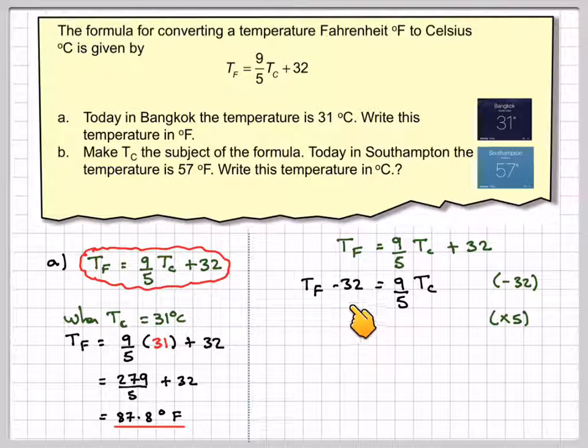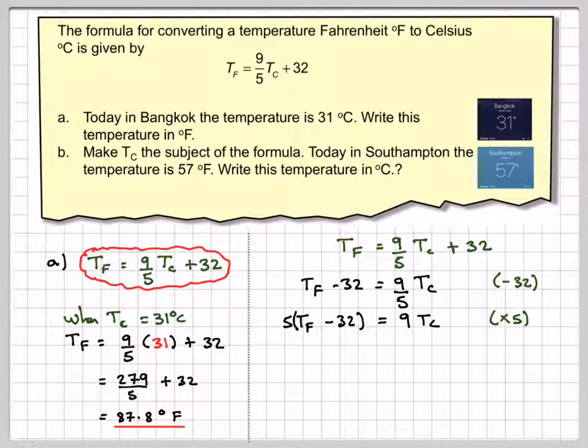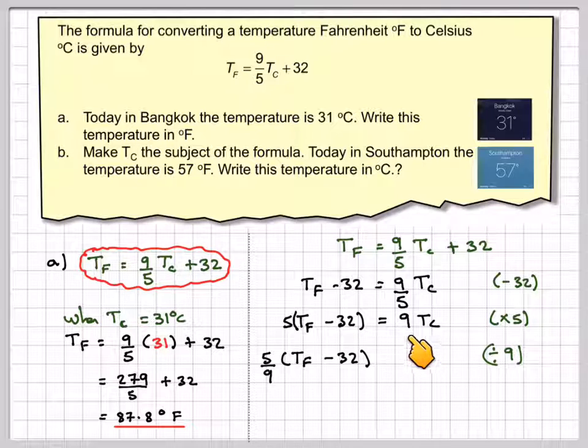Then you need to multiply this side by 5, but you need to multiply both things by 5, so you need to introduce some brackets. On this side, we've got 9 Tc, so we've got 5 times all of this equals 9 Tc. Now multiplying by 9, the opposite of that is to divide by 9. So we're going to put 5 over 9, which is 5 divided by 9 Tf minus 32. If we do 9 divided by 9 on this side, we get 1 Tc. So we've made Tc the subject.